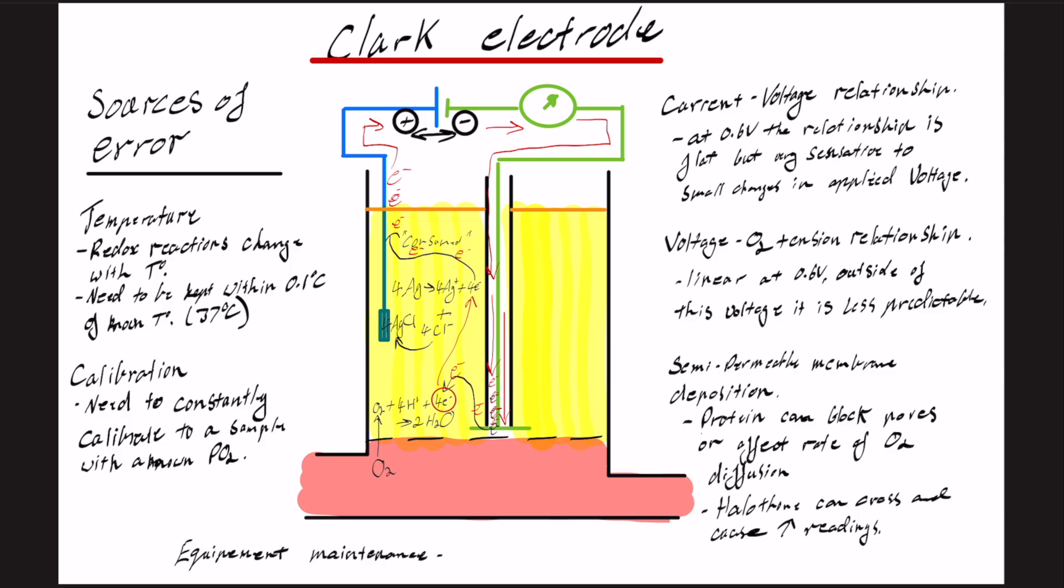You also can think of equipment maintenance issues. So you need your battery changes. You need the possibility of silver buildup on the platinum cathode as well, because remember the platinum cathode is negative, while the silver is charged positive, and slowly silver can actually disintegrate off the anode and then settle and accumulate on the cathode.